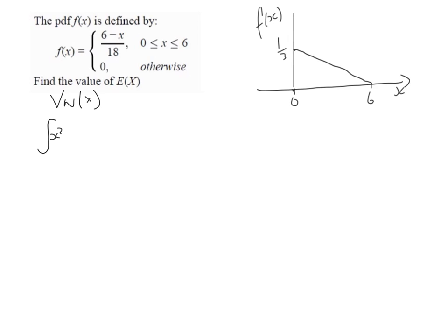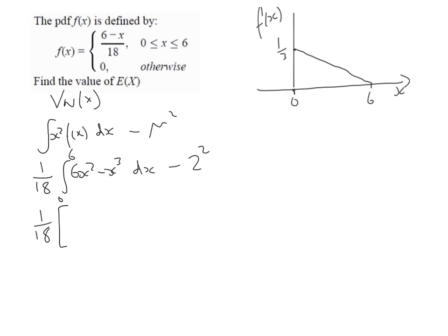Writing it generally, we have the integral of x² multiplied by f(x), minus the mean squared. Applying that to our function and taking the 1/18 out, we integrate between 0 and 6 of 6x² minus x³. Then we subtract the expectation of X squared, which is 2 squared. Integrating gives us 1/18 times (6x³ over 3 minus x⁴ over 4) between 0 and 6, minus 2 squared which is 4.